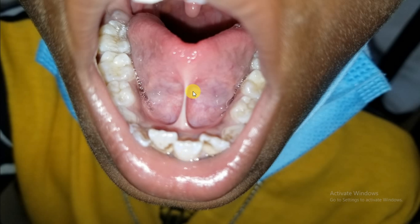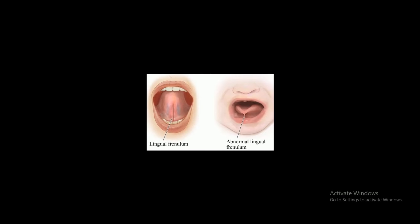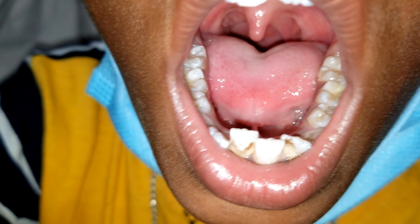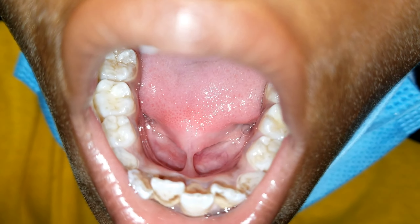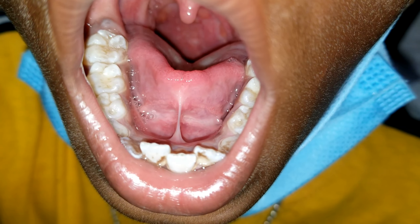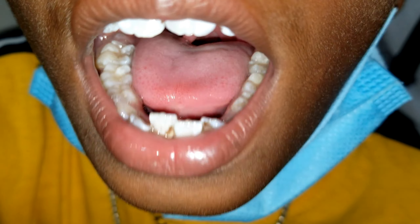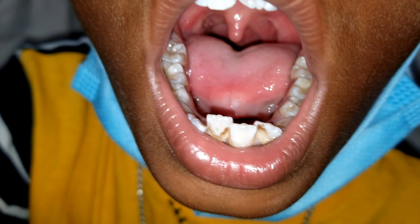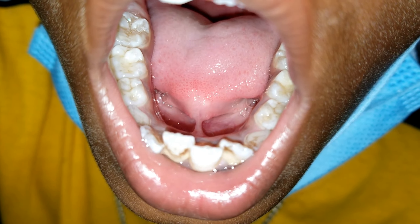Today I will be discussing tongue tie, or ankyloglossia. In this picture we can see a tongue tie, and a comparison of normal and abnormal lingual frenulum. Tongue tie is a condition present at birth that restricts the movement of the tongue. The term ankyloglossia means 'ankylo' — attached, and 'glosea' — tongue. In this condition, the inferior frenulum attaches to the bottom of the tongue.